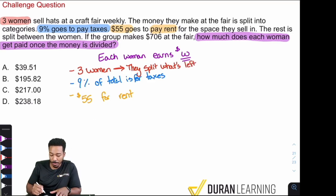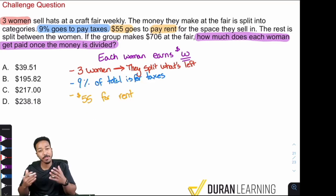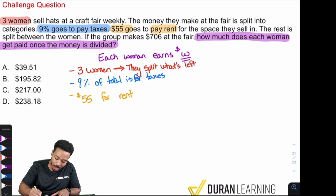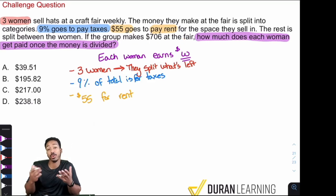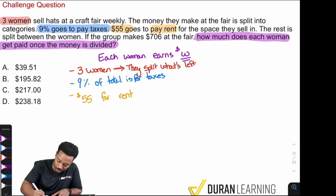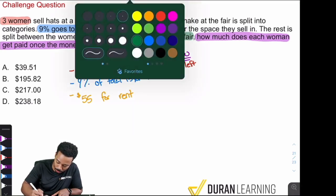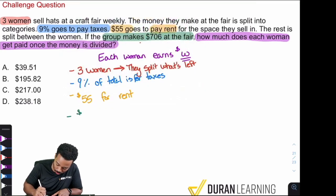And we can say, you know, the three women, they split what's left. They split what's left. And what do we mean by what's left? We mean after the tax, after they pay the rent, what's left over is what's going to be split amongst the women. And then we see here, if the group makes $706 at the fair. So they're telling us what the total earnings were. And so we can highlight that as well. So the group makes $706 at the fair. So $706 earned. And that's their total there.